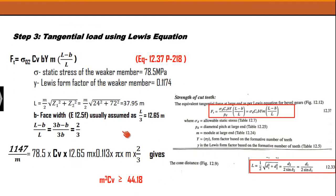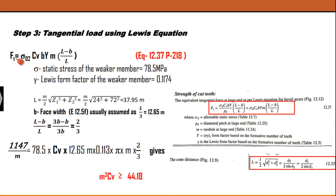Moving to step 3: the Lewis equation. Sigma times 0.2 is used because we are designing for the weaker member, which is the gear. Compared to the spur gear equation, there is a slight change here — we have the cone length L and capital Y, where capital Y equals pi times small y. One important substitution is regarding L: it is given as M/2 times root of (Z1² + Z2²), giving a value of approximately 37.95M.